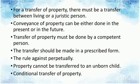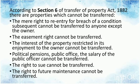Conditional Transfer of Property: Under Section 25 of the Transfer of Property Act 1882, property can only be transferred in compliance with the condition mentioned. If the condition becomes impossible or is forbidden by law, the transfer would be held as void. There is the chance of an heir apparent succeeding to an estate, the chance of a relation obtaining a legacy on the death of a kinsman, or any other possibility of a like nature — these cannot be transferred.